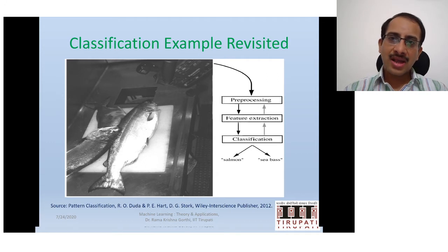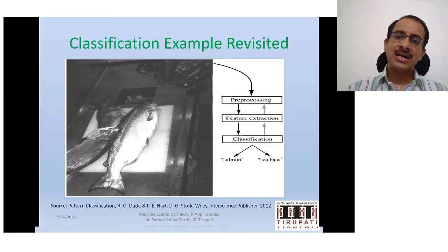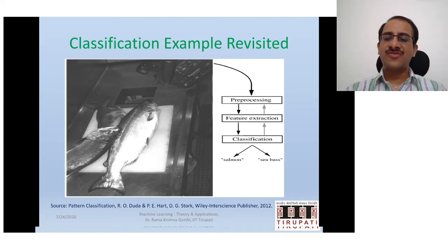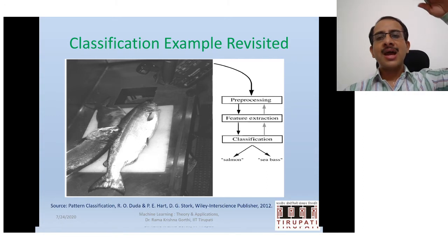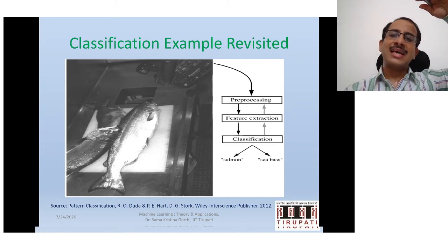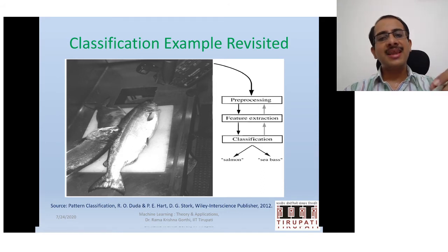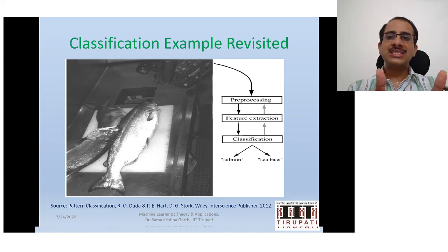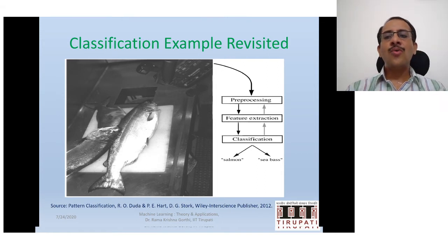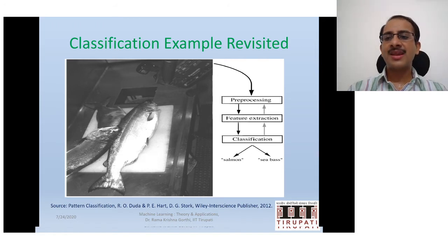To get started, let us revisit the scenario from the previous class: we would like to categorize fishes into two classes — Salmon or Sea bass — coming on a conveyor belt, with a camera on top taking images to automate classification. As discussed, we start with preprocessing, where we segment the region of the fish and align it in a single direction, because any measurements we take must be standardized. Once aligned and segmented, we measure some attributes — features such as intensity values, length, width, and so on.